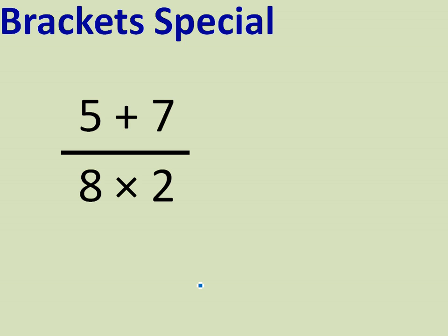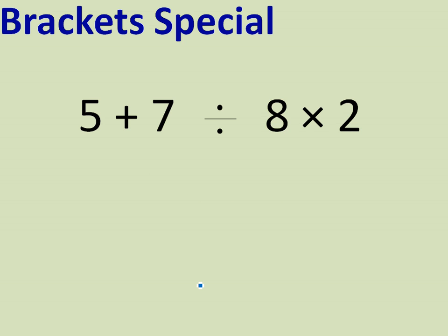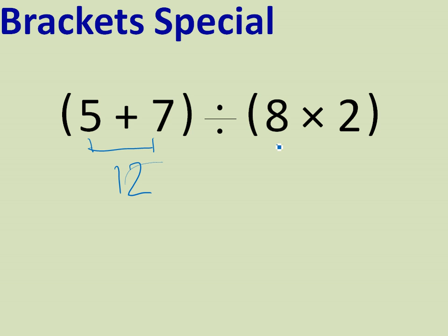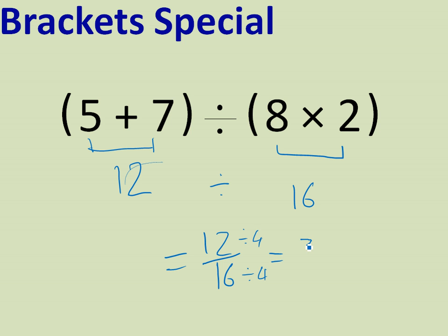And finally, one more example: 5 plus 7 over 8 times 2. You need to treat the top and bottom of the fraction as two separate expressions and evaluate them before you can do the dividing. So 5 plus 7 divided by 8 times 2 — put both expressions inside brackets. We get 12 and 16. So we have 12 divided by 16, which you can write as a fraction and simplify: divide top and bottom by 4 to get 3 quarters.